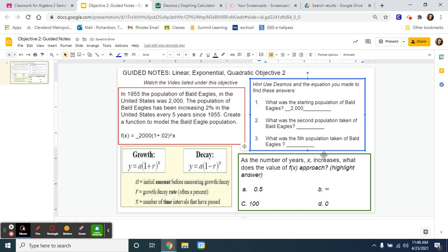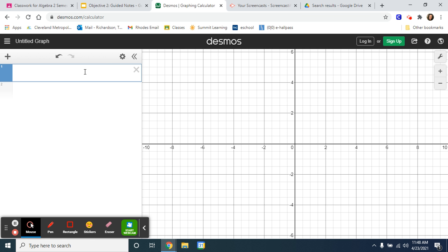Now it's going to get a little bit harder. Now it's asking what was the second population taken of bald eagles? We don't really know, right? So we're going to use this equation to help us. So I'm going to copy the equation I made, and I'm just going to copy what I've typed, not this f of x or equals. I'm going to copy it and I'm going to go over to Desmos. And I'm actually going to put the equation in Desmos. So 2,000 parentheses 1 plus 0.02 parentheses that x is up high.